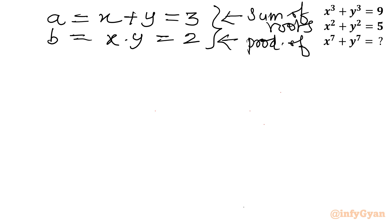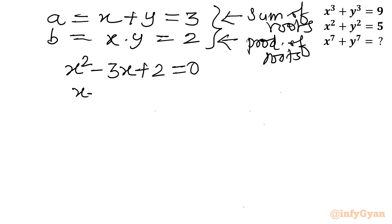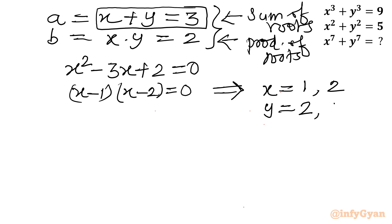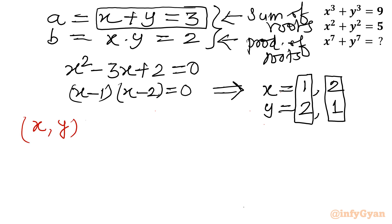I will consider a quadratic equation whose roots are x and y, since we know their sum and product. The equation is x² - 3x + 2 = 0, which factorizes as (x - 1)(x - 2) = 0. So x = 1 or x = 2. If x = 1 then y = 2, and if x = 2 then y = 1. The ordered pair solutions are (x, y) = (1, 2) and (2, 1).